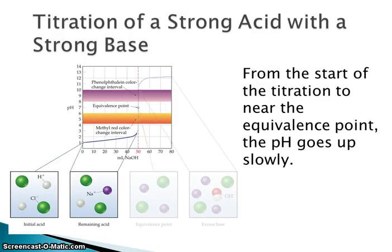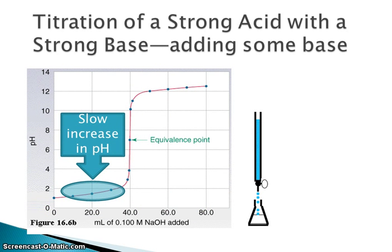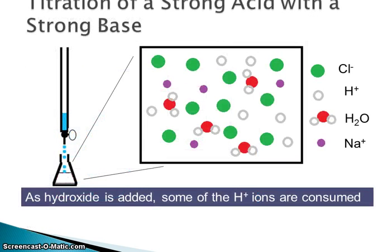As we start the titration, we'll initially have a very low pH, and as we start to add the base from the buret, the pH is going to go up very, very slowly. We see that in the graph: a slow increase in pH as we add the titrant — the NaOH from the buret — increasing very gradually for quite a while. As you add the hydroxide, some of the H⁺ ions are consumed; they react with the OH⁻ ions you've added and make water.